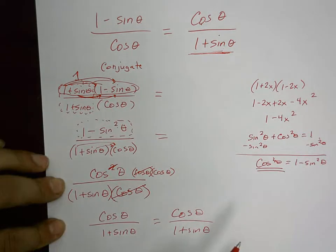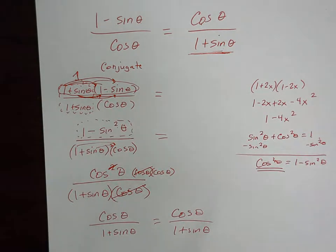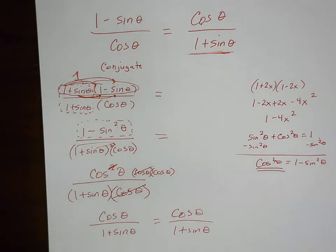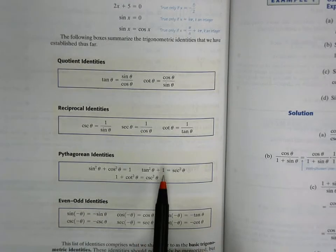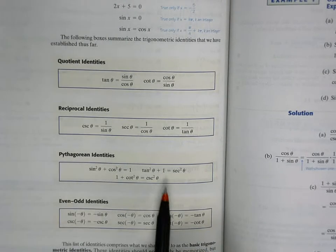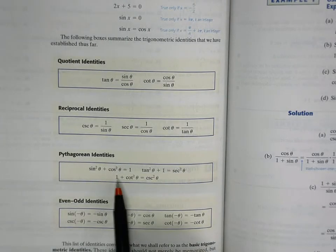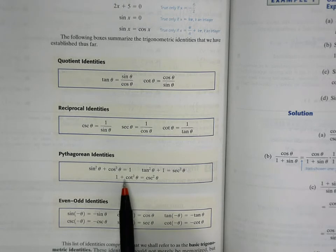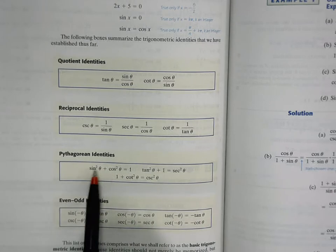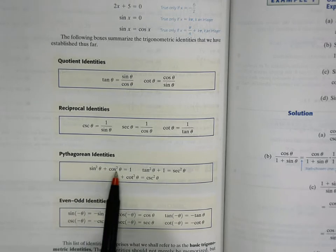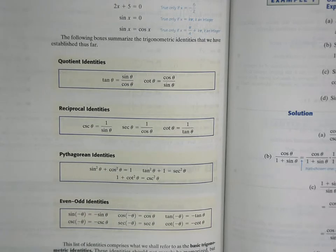The conjugate technique may also apply to the other Pythagorean identities. For example, you might end up with one minus cosecant squared theta, which equals negative cotangent squared theta. But most often you'll encounter it with sine squared theta plus cosine squared theta equals one.